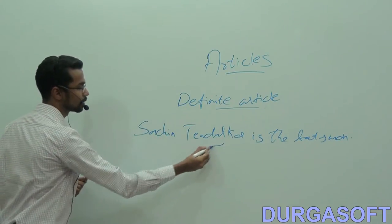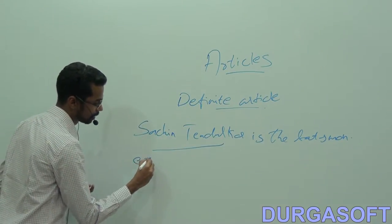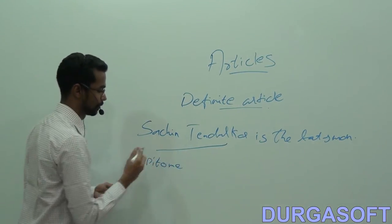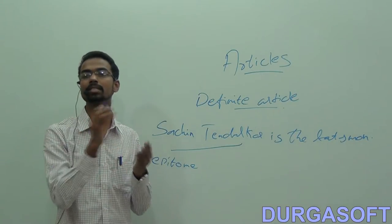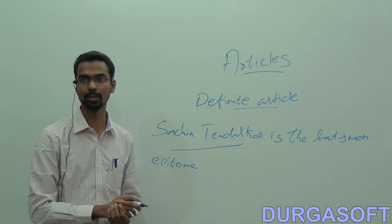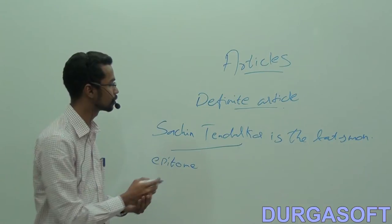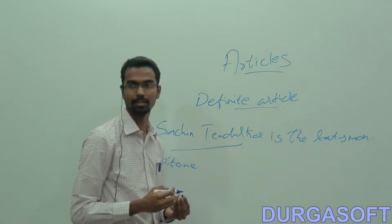So here I am using Sachin Tendulkar as an epitome, what I would call an epitome which is a person representing a quality. So in this case also we can use the definite article.